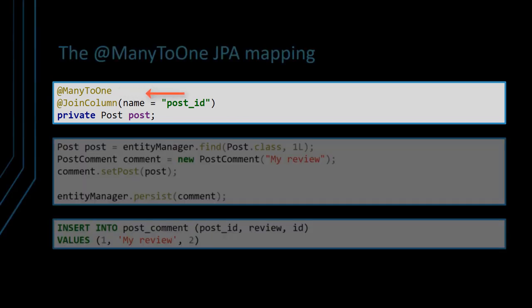You can also supply a join column annotation to specify the foreign key column. For this particular example, the join column can be omitted since, by default, Hibernate joins the name of the entity attribute with the identifier using an underscore sign.